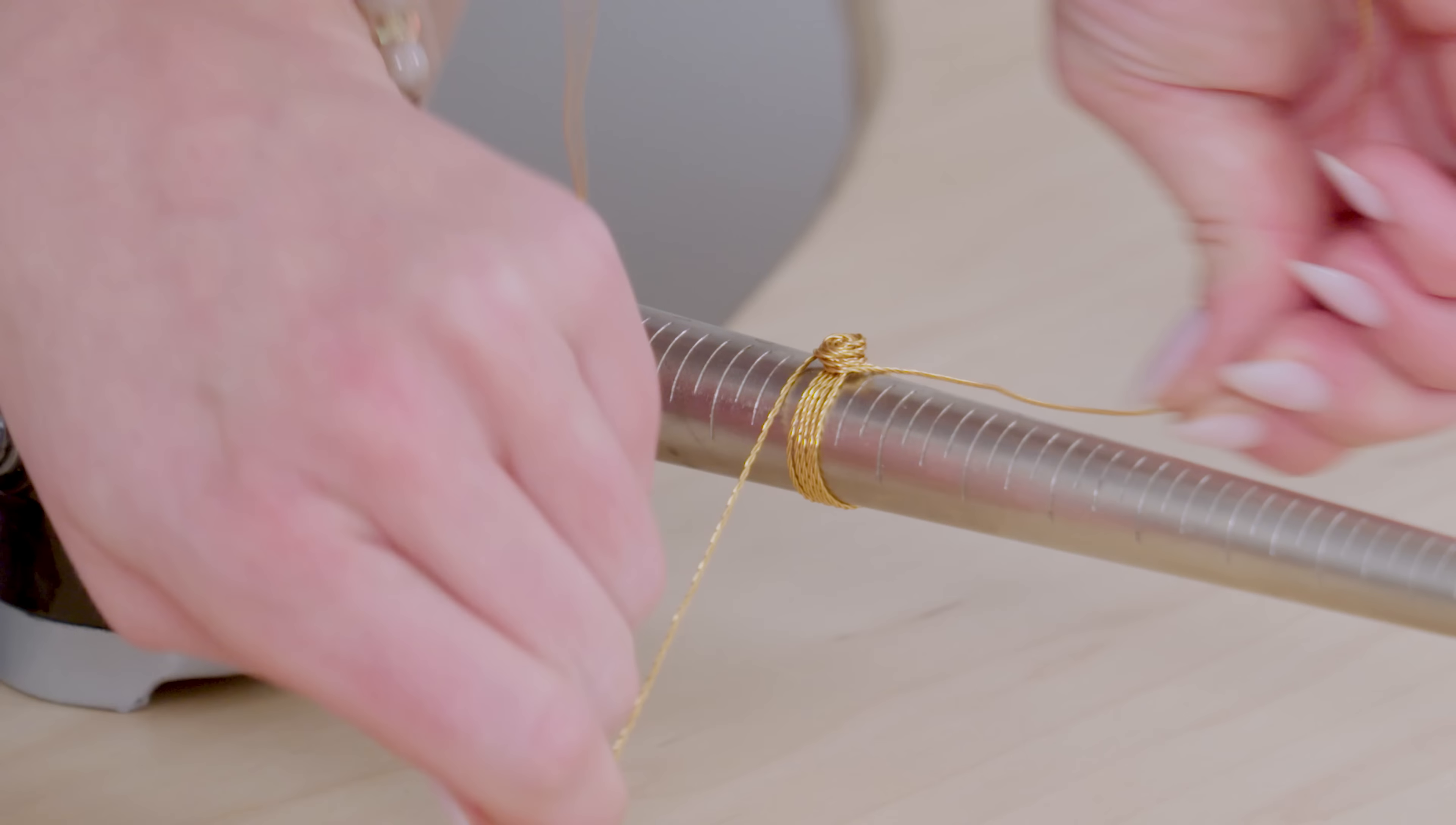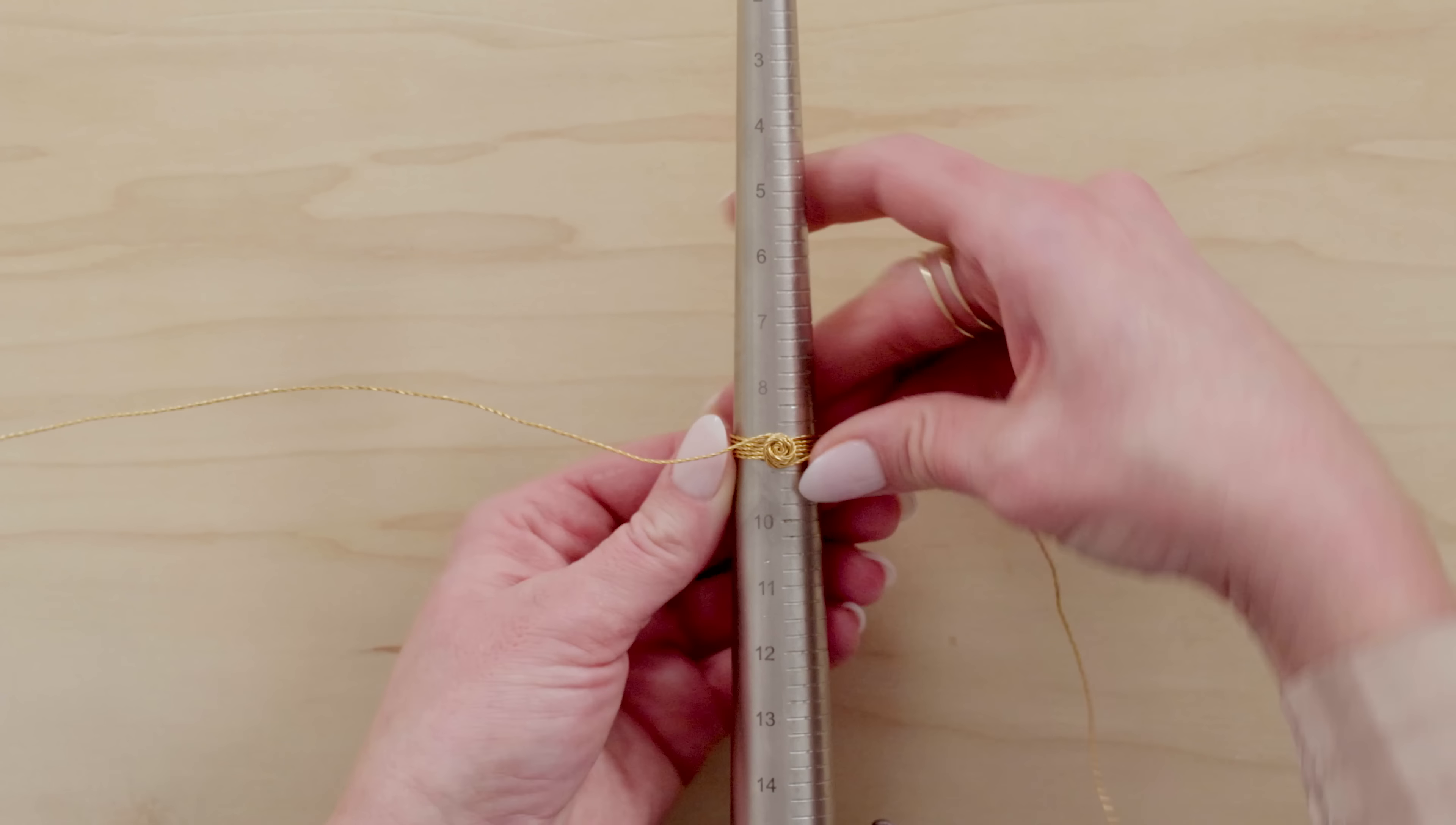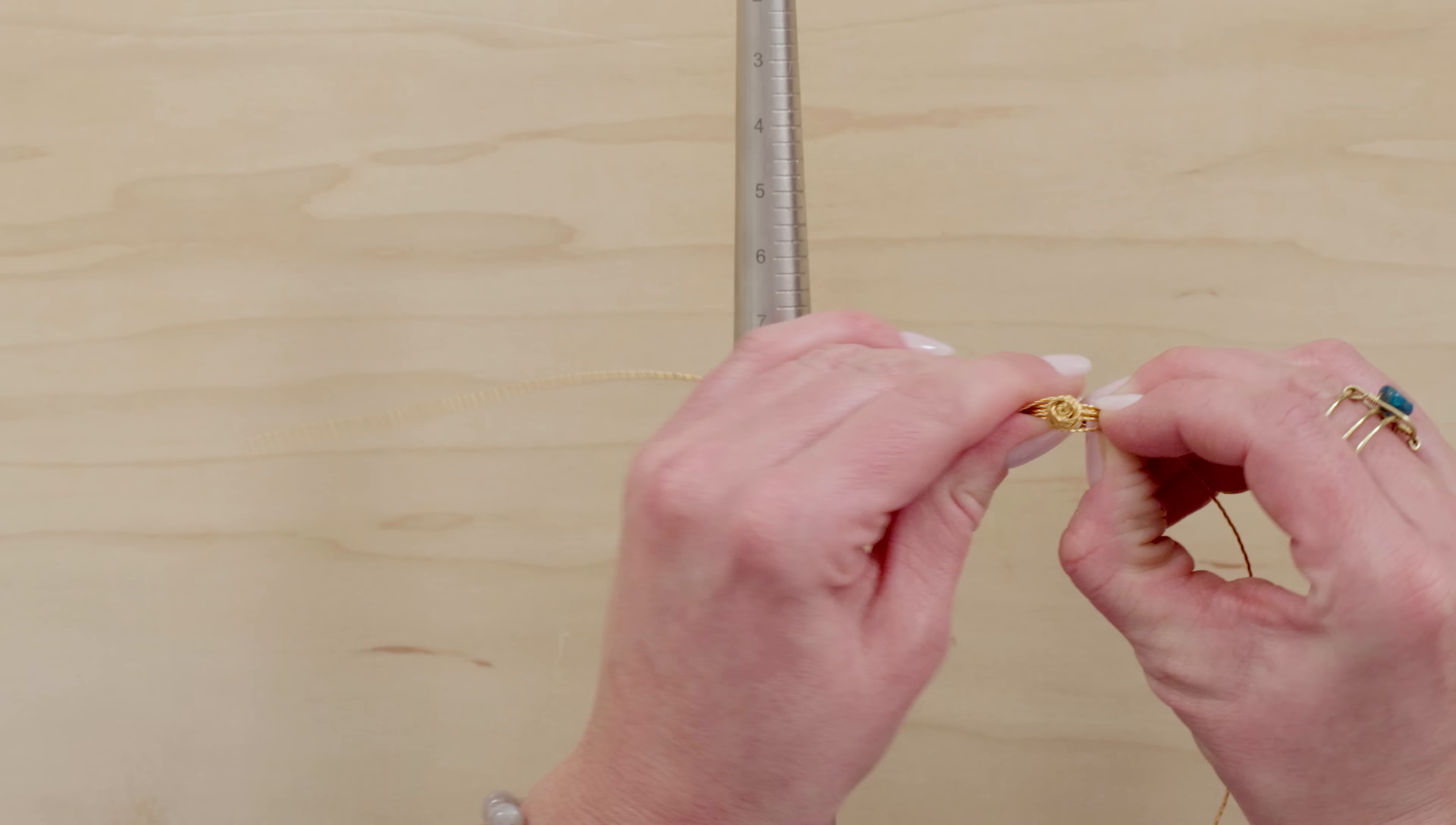And you can do as much or as little as you want here depending on the look you want. Okay so then take it off of your mandrel when you're ready with one tail on each side.